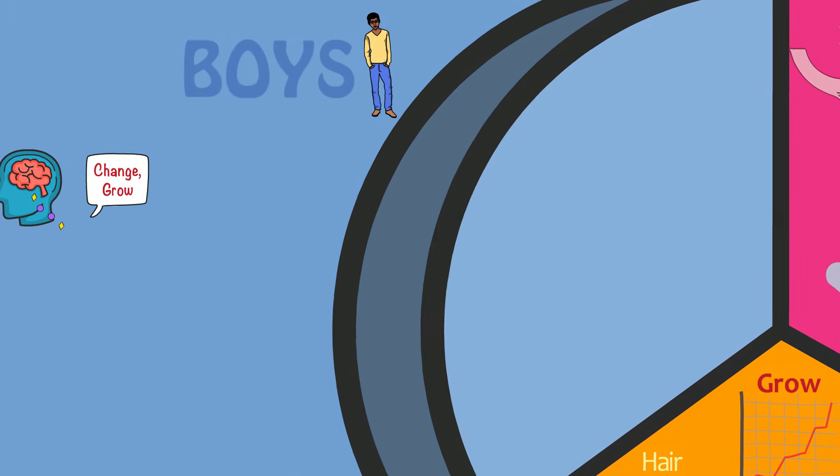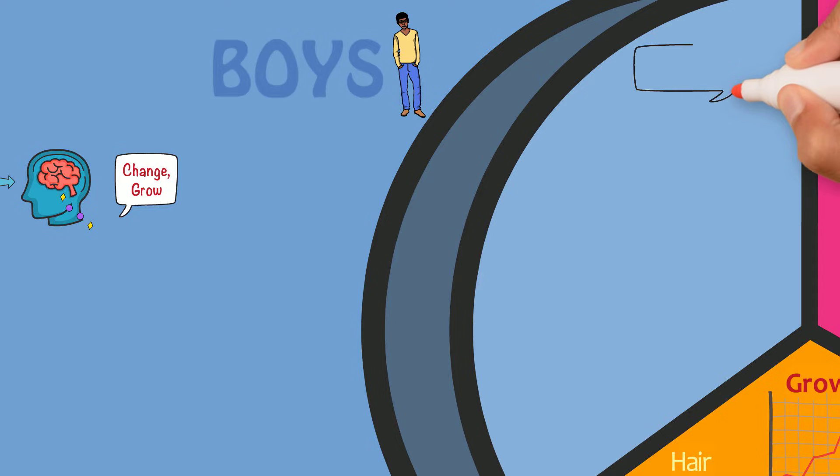In boys, puberty also comes with its own set of changes. The voice will deepen and the Adam's apple, which is a bump we all have in the middle of the neck, will grow in size.